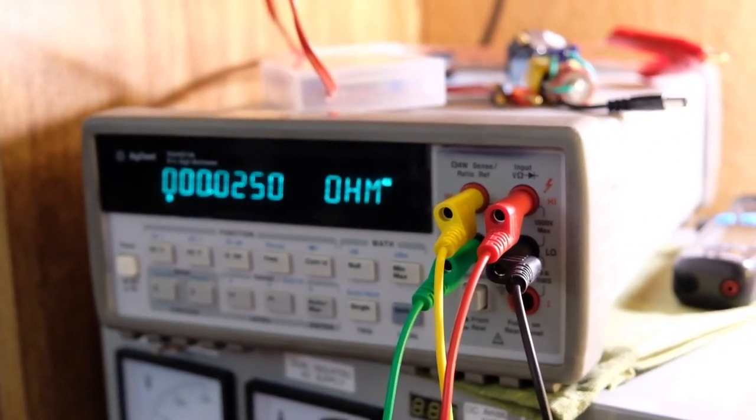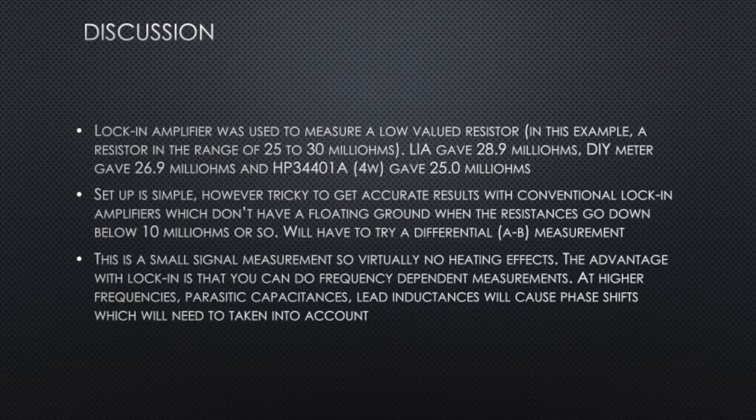To summarize, a lock-in amplifier was used to measure a low-valued resistor in this example, a resistor in the range of 25 to 30 milliohms. The lock-in amplifier result came out to be 28.9 milliohms, the DIY meter gave me 26.9 milliohms, and the HP 34401A four-wire measurement gave 25 milliohms. I think both the lock-in and the DIY meter are pretty good considering that the resistors I had were 100 milliohms plus or minus 1% for each, and if you average them out it should be close to 25 milliohms. With the extra parasitics thrown in, I would have expected one or two more milliohms than what the HP gave me.